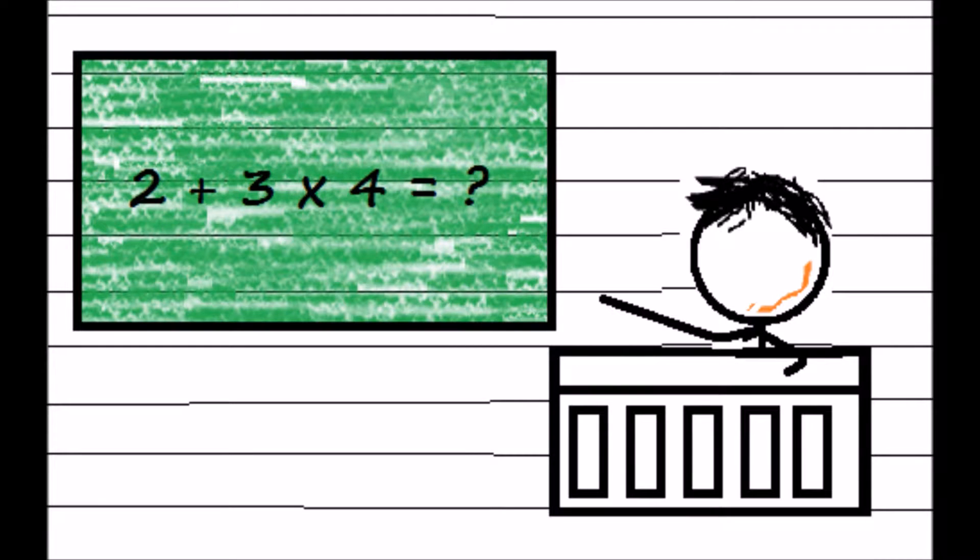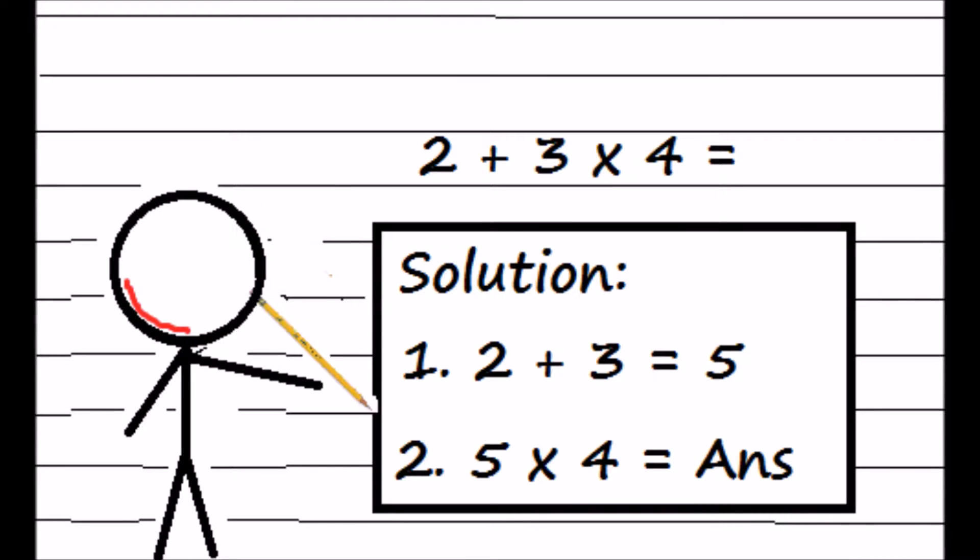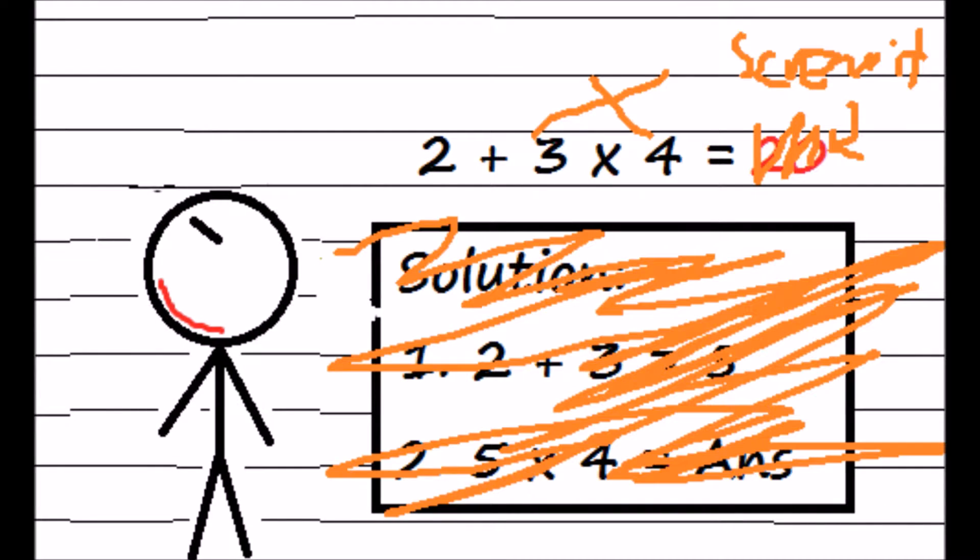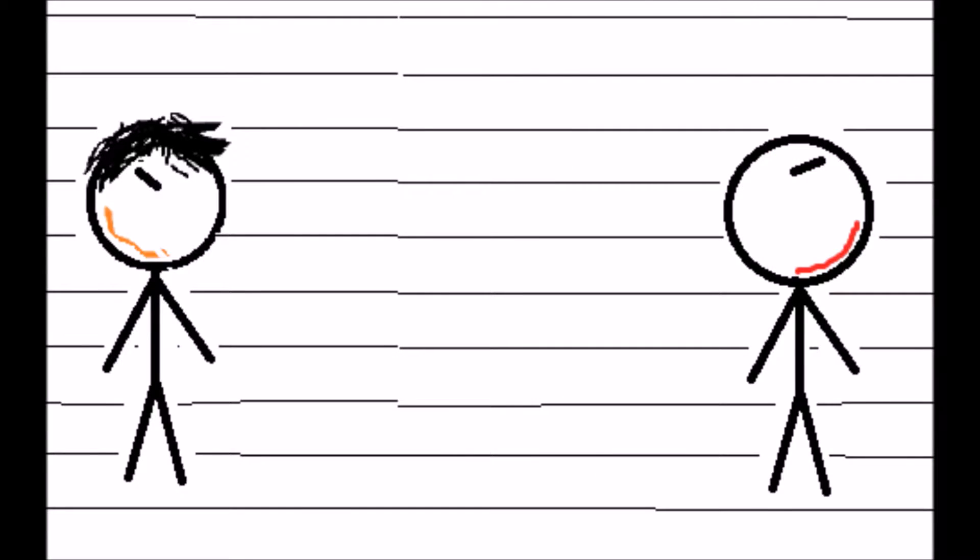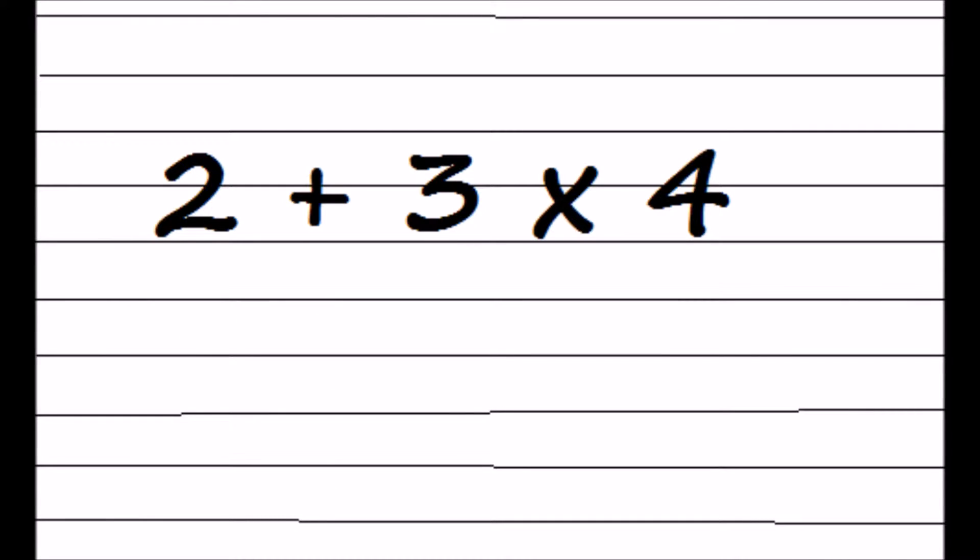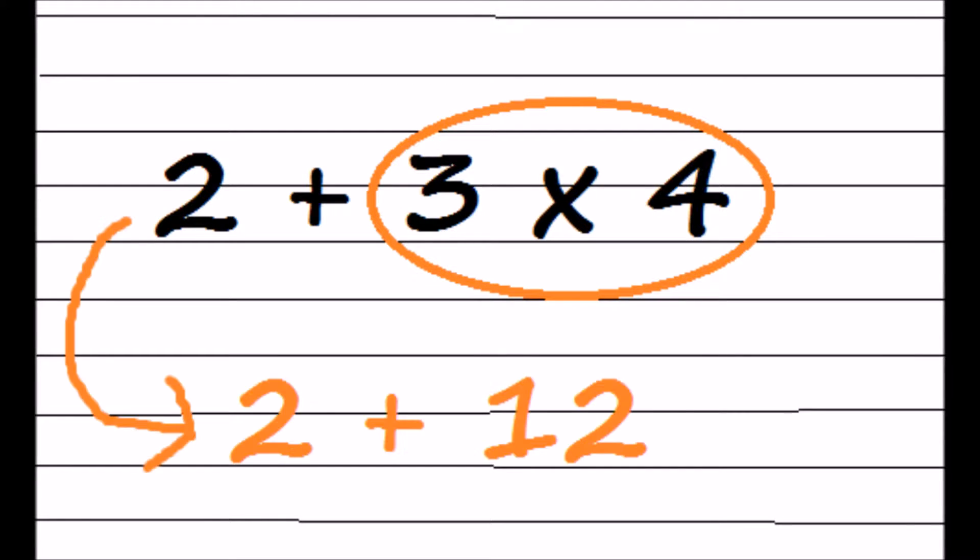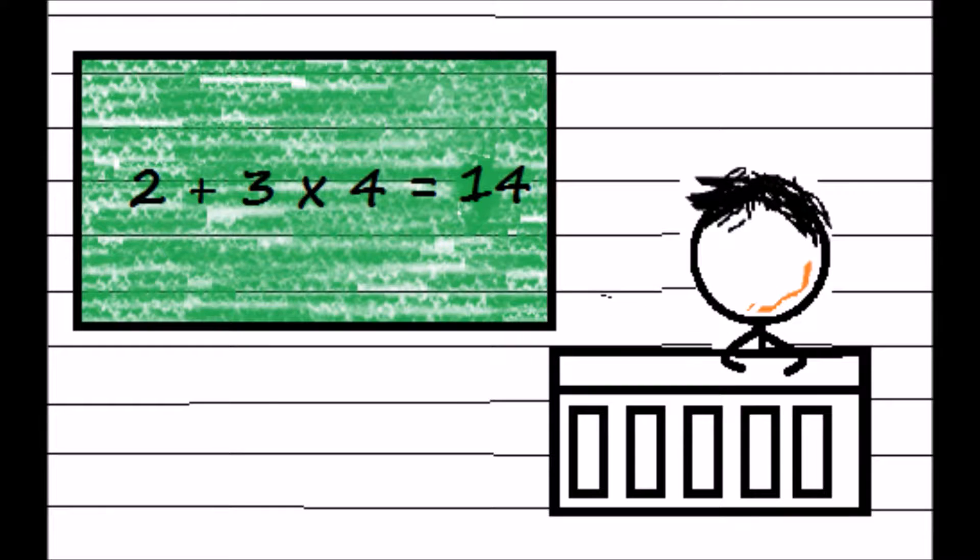So for example, 2 plus 3 times 4. You can solve it from left to right and say that it is 20, but that is not how it works. You're answered wrong! Instead, you need to follow the PEMDES rule. So since multiplying is before adding, then you should multiply 3 by 4 first, and then you should add 2. The answer will be 14. That's the correct answer.